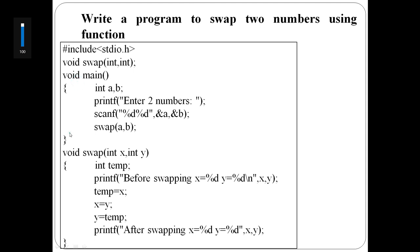In the main function, declare a and b, enter two numbers, read a and b. Then the function call is swap of a, b. Say the values passed are 10 and 20 — a is 10 and b is 20.